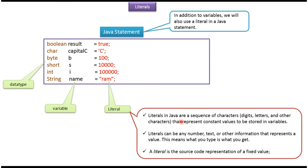Literals in Java are a sequence of characters that represent constant values to be stored in variables. Literals can be any number, text, or other information that represents a value. This means what you type is what you get. A literal is the source code representation of a fixed value.